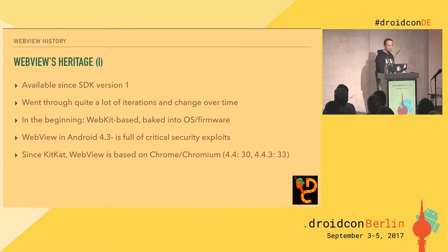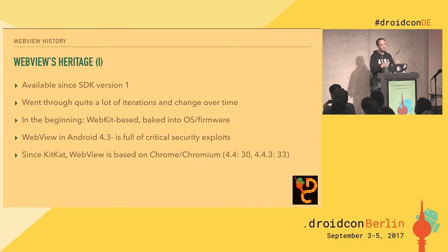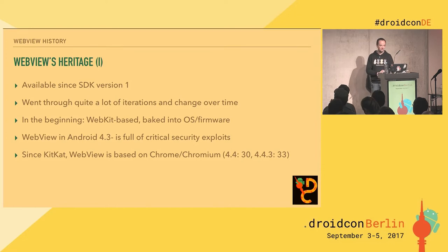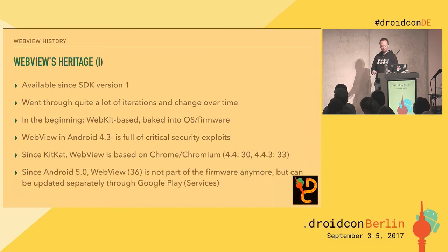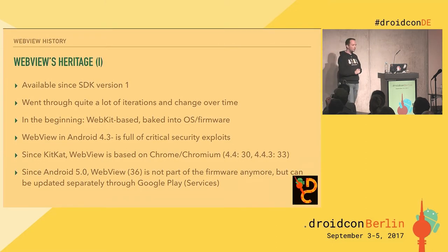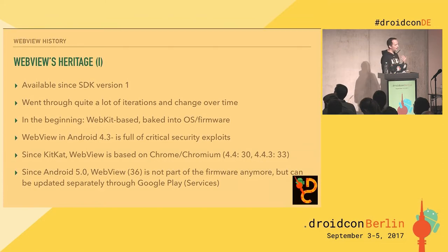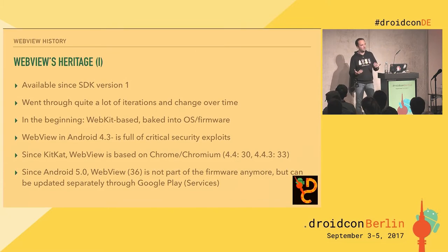Since KitKat Android 4.4, WebView is now based on Chrome — technically Chromium, the open source project. In Android 4.4 Google shipped Chrome 30, upgraded to Chrome 33 in 4.4.3. The big change with Android 5 and Chrome 36 is the update model: previously Chrome was baked into the firmware and couldn't be updated. Since Android 5, it gets updated separately through Google Play services, meaning you get new versions of the WebView independently of Android OS updates — which is really important.